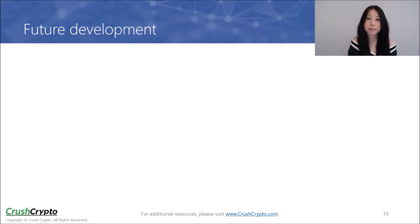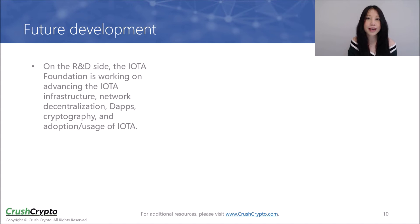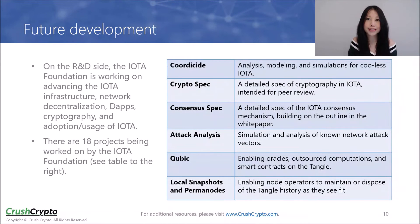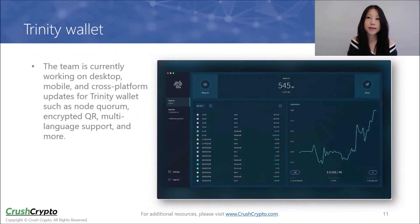In terms of future development, on the research and development side, the IOTA Foundation is working on advancing the IOTA infrastructure, network decentralization, decentralized apps, cryptography, and adoption and usage of IOTA. In addition, there are 18 projects being worked on by the IOTA Foundation. The Trinity Wallet Roadmap, which can be found on the project's website, highlights the team's development plan for its wallet. The team is working on a number of desktop, mobile, and cross-platform updates, such as node quorum, encrypted QR, multi-language support, and more.